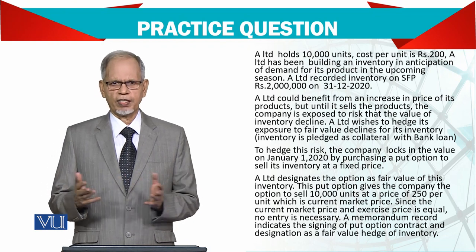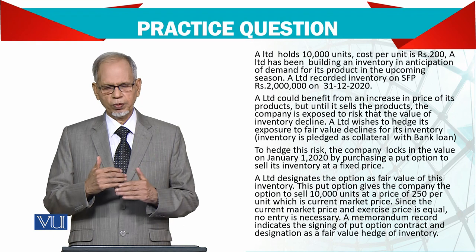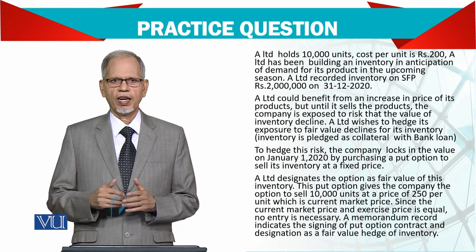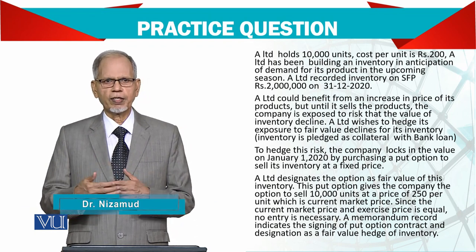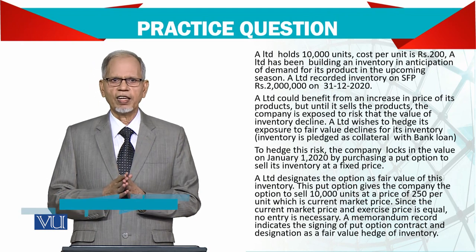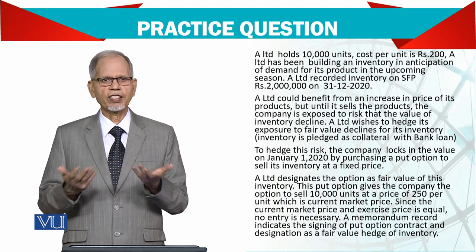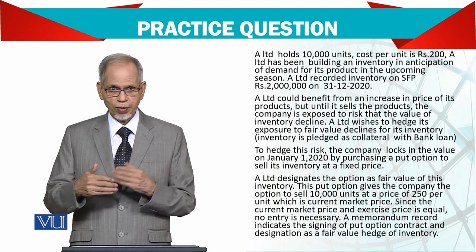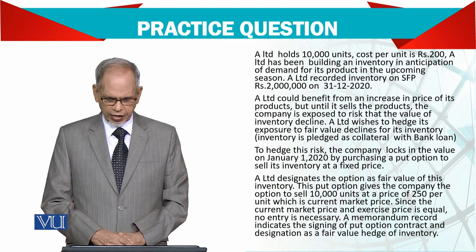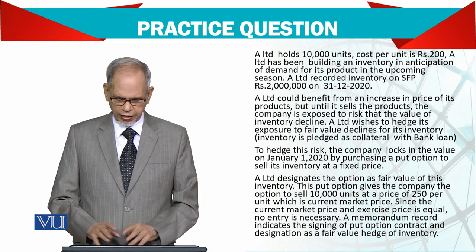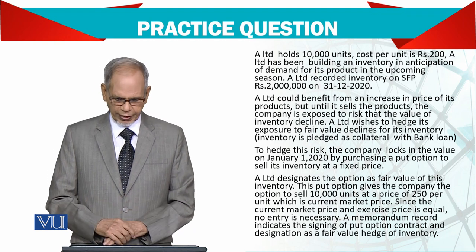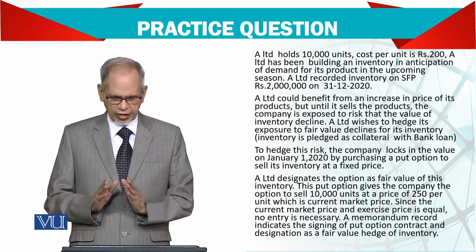Normally, there is a lot of demand for the product in the textile season, which runs October, November, and December. You can buy all the requirements for the year to get enough stock. After the season, inventory is built up. A Limited recorded inventory on the statement of financial position at 2 million, which is 10,000 units multiplied by 200 rupees, as of 31/12/2020.